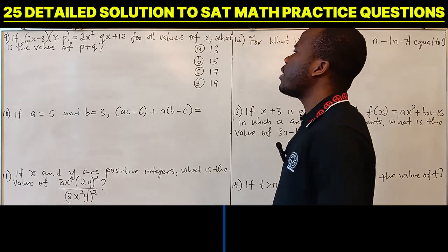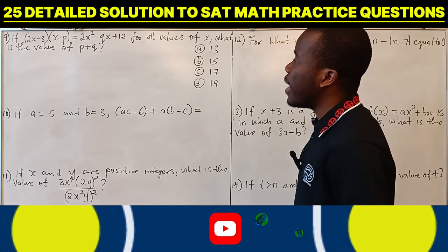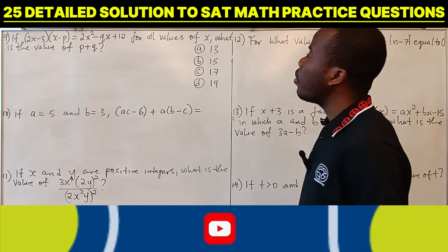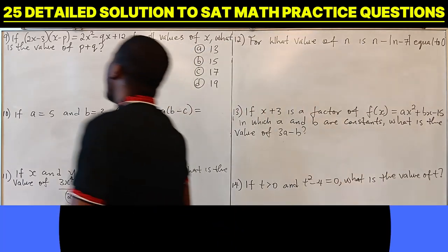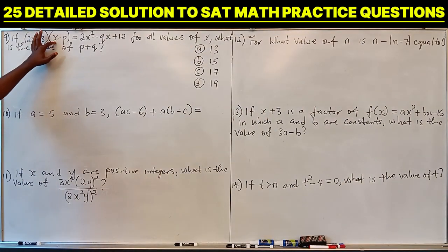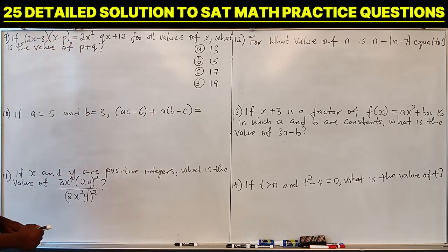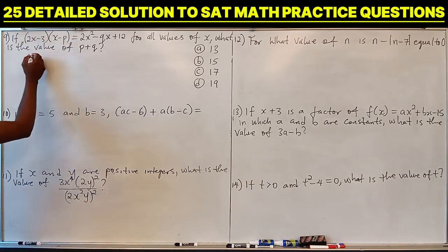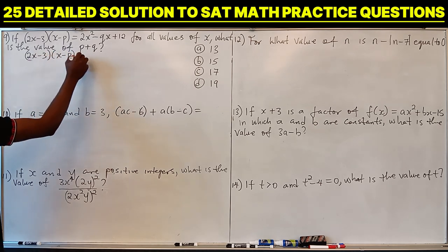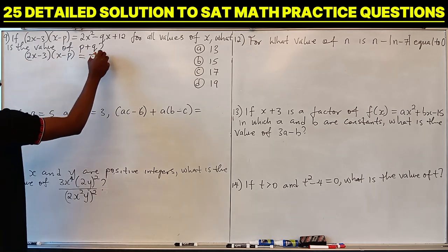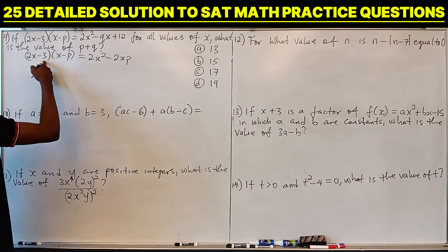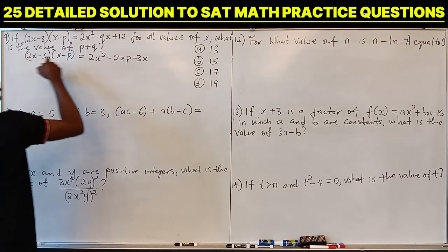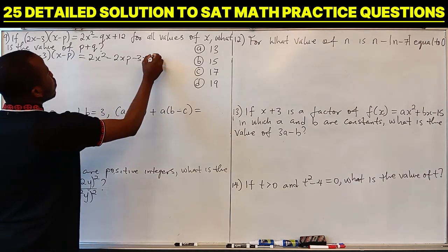Question 9: if (2X minus 3)(X minus P) equals 2X² minus QX plus 12 for all values of X, what is the value of P plus Q? We expand the left side: 2X times X is 2X², 2X times minus P is minus 2XP, minus 3 times X is minus 3X, and minus 3 times minus P is plus 3P.